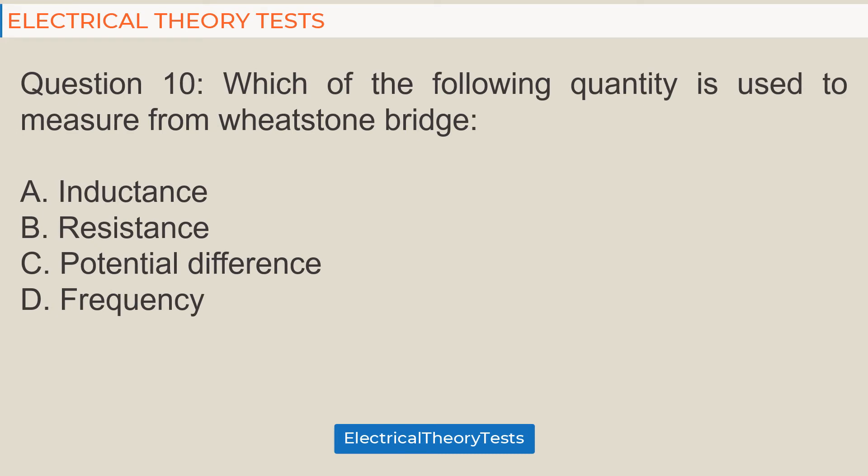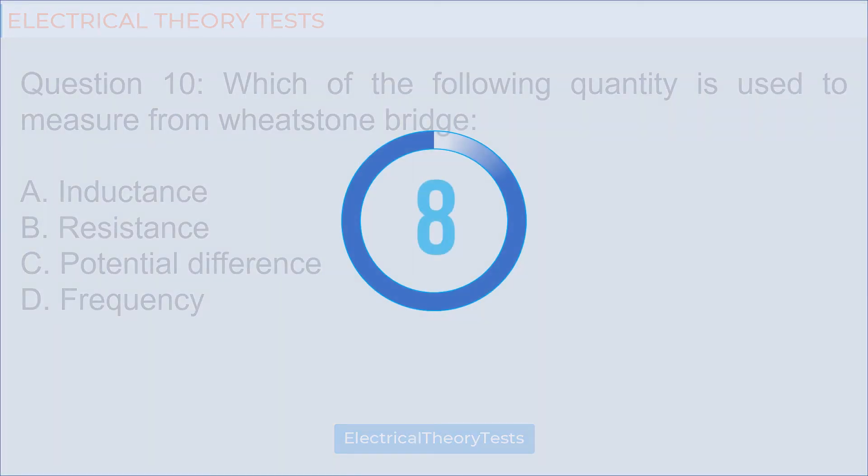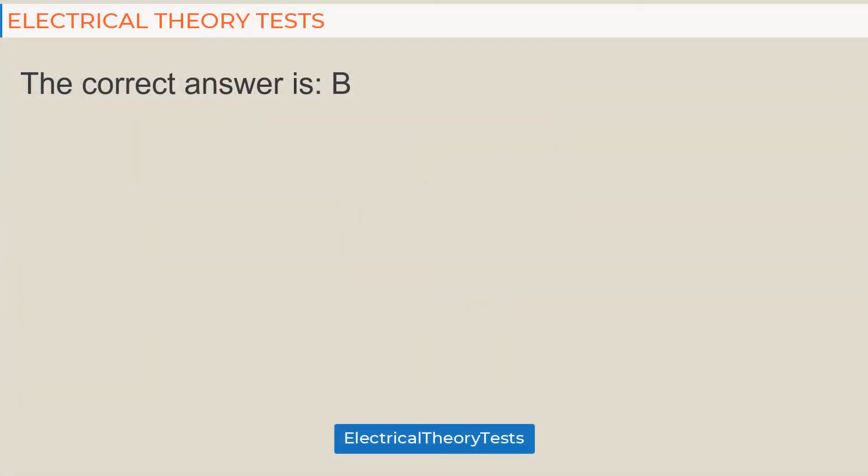Question 10: Which of the following quantity is used to measure from Wheatstone bridge? A: Inductance, B: Resistance, C: Potential difference, D: Frequency. The correct answer is B.